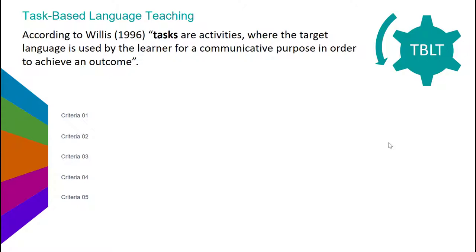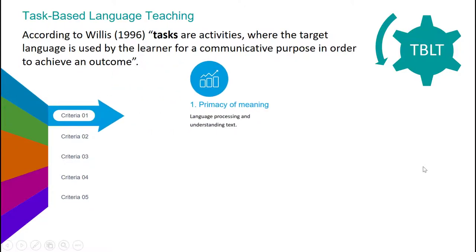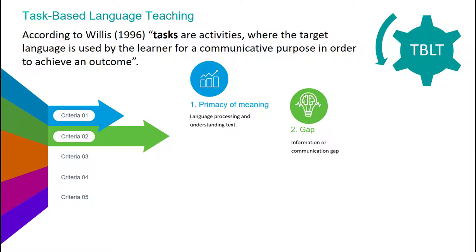Here are the criteria for such a task. Criteria 1 is primacy of meaning: learners should be primarily concerned with processing the language and understanding the text — for instance, listening to the news to extract numerical information. Criteria 2 is information or communication gap: there should be information that has to be communicated with others, like conveying information, expressing their opinion, or making a decision.